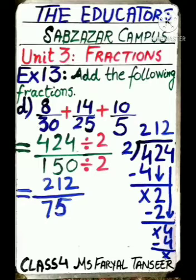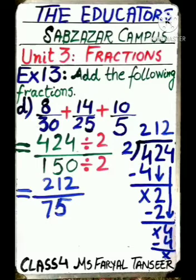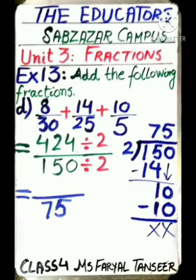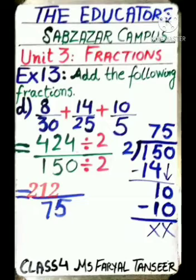We need to convert 424/150 to its lowest form. We will divide by the smallest digit, which is 2, since both 424 and 150 are even numbers. 424 ÷ 2 = 212, and 150 ÷ 2 = 75. So the simplified form so far is 212/75.